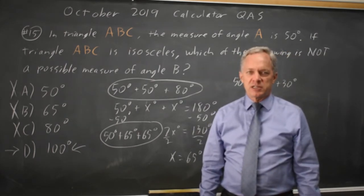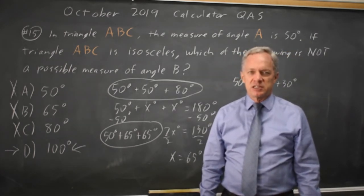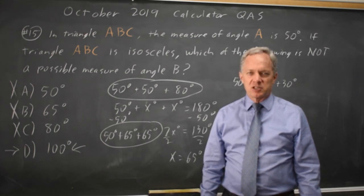College Board often tests the fact that isosceles triangles have two equal sides, and that if you have two equal sides, the opposite angles are also equal. And they also test the fact that the largest side is always opposite the largest angle,